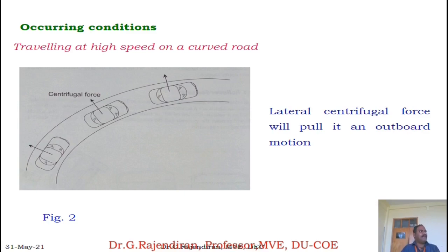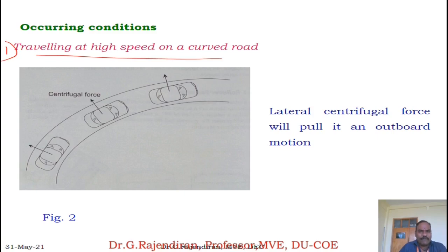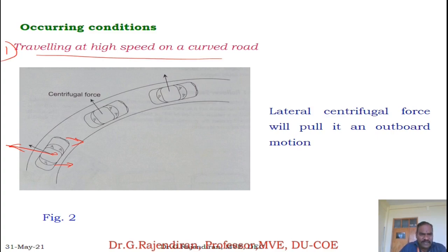The conditions when vehicle rollover occurs: first, when the vehicle is travelling at high speed on a curved road, a lateral force is developed at the tyre contact patch. The centrifugal force acts towards the outer turn, and there is resistance at the tyre contact patch from the ground. If the centrifugal force exceeds the resistive force, the vehicle starts to roll, being pulled to the outside of the turn.